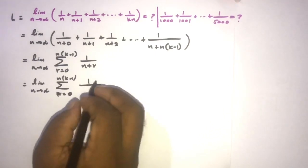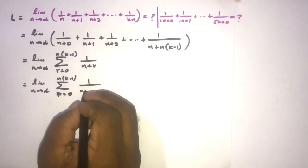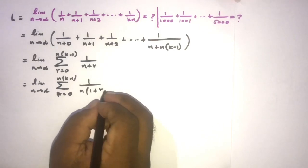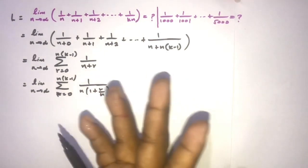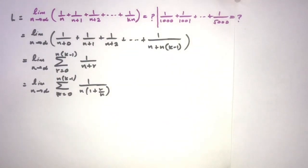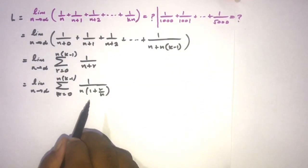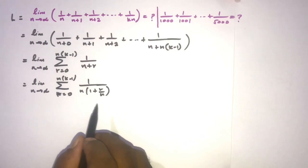And here now I am going to take n as a common factor, so n times 1 plus r over n. Now we know the method how to convert infinite series as a definite integral.